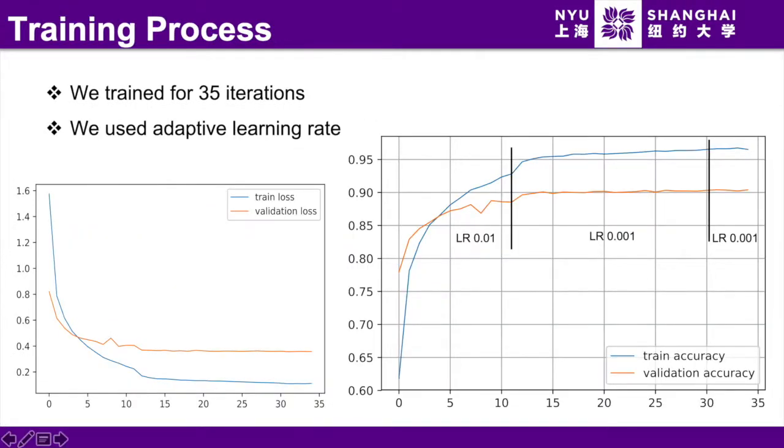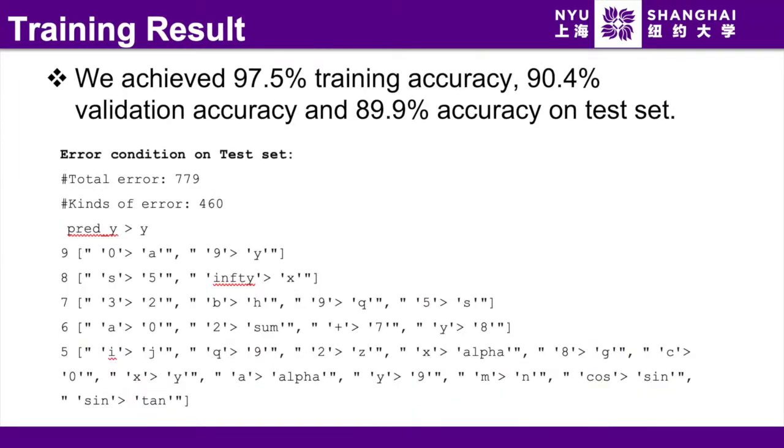We trained for 35 iterations and used adaptive learning rate. The learning rate starts from 0.01 and is divided by 10 when the accuracy fluctuates. We achieved 97.5% training accuracy, 90.4% validation accuracy, and 89.9% accuracy on the test set.